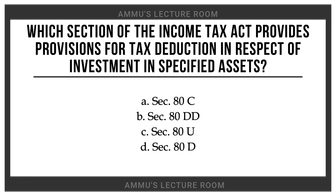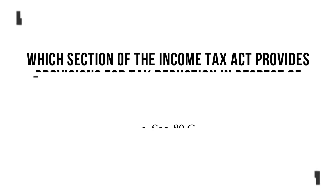Which section of the Income Tax Act provides provision for the tax deduction in respect of investment in specified assets? Option A: Section 80C. Option B: Section 80DD. Option C: Section 80U. Option D: Section 80D.